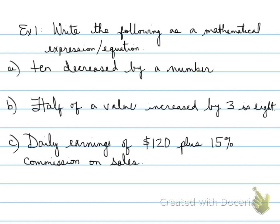Part A is an expression and part B and C are going to be equations. Part A says 10 decreased by a number. Part B says half of a value increased by 3 is 8. And finally, part C says daily earnings of $120 plus 15% commission on sales. What does this all mean? Well, we need to create either an equation or expression, depending on what it is, to match the following statement. All right, let's look at the first one. 10 decreased by a number, 10 minus x. What we would do is let x represent a number. So x represents a number. And that's what you would write as a statement in the very beginning. Let x represent a number. And then we write the equation. Done. Don't forget the let statement, folks.